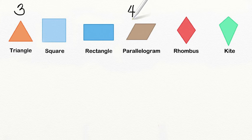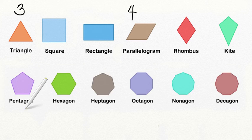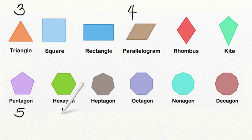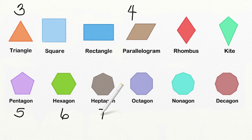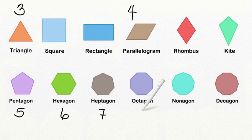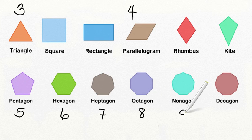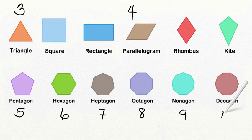All of these are four-sided polygons. Let's go ahead and look at a few more. Five-sided polygons are called pentagons. Six-sided polygons are called hexagons. Seven-sided polygons are called heptagons. Eight-sided polygons are called octagons. Nine-sided polygons are called nonagons. And ten-sided polygons are called decagons.